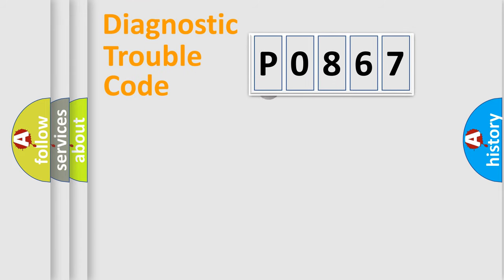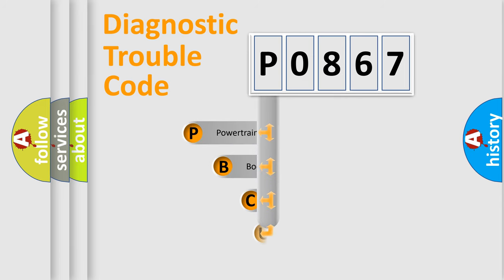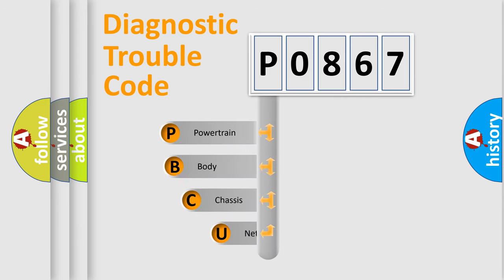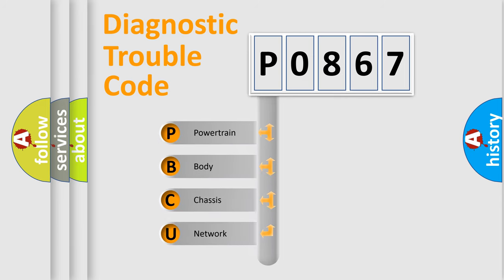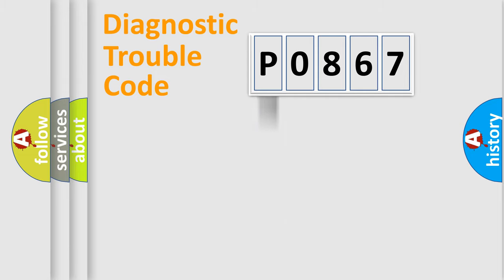First, let's look at the history of diagnostic fault code composition according to the OBD2 protocol, which is unified for all automakers since 2000. We divide the electrical system of an automobile into four basic units: Powertrain, Body, Chassis, and Network. This distribution is defined in the first character of the code.